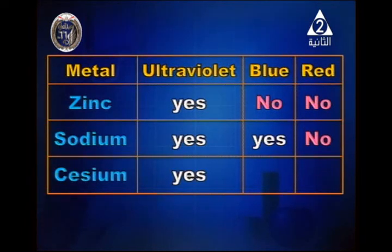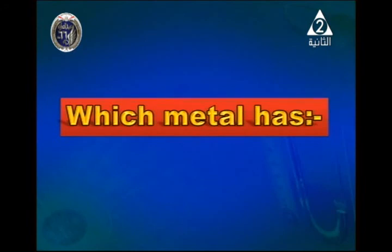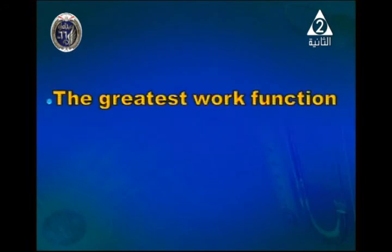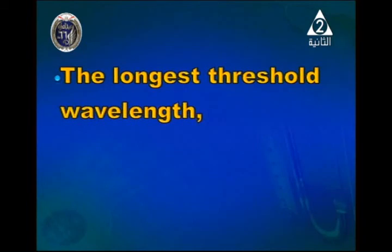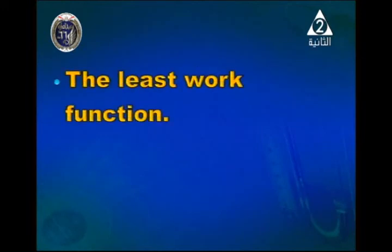For cesium: ultraviolet, blue, and red all managed to extract electrons — it was quite easy with cesium. Which metal has the greatest work function? It is zinc, the hardest to extract electrons from. Which metal has the highest threshold frequency? Also zinc. Which metal has the longest threshold wavelength and the least work function? That is cesium.